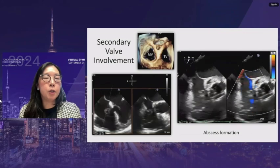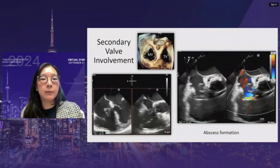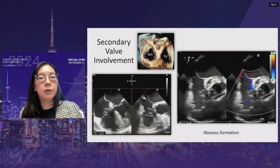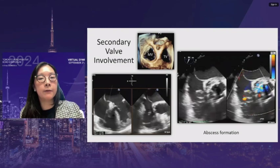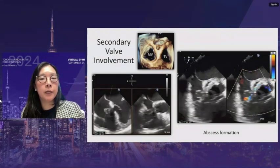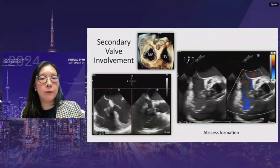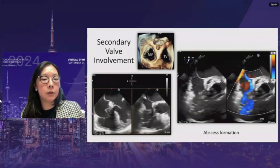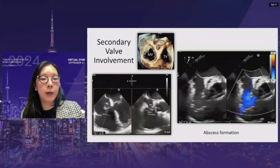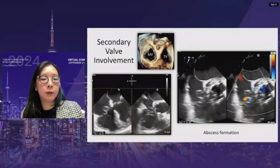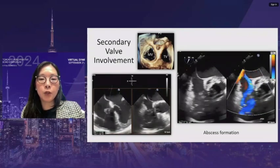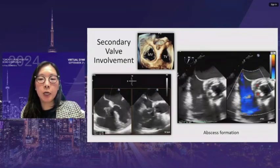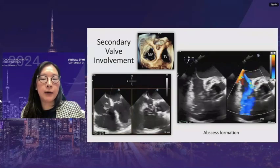Secondary valve involvement can also occur via abscess formation, not just jet direction. A 3D image shows the close proximity of all cardiac valves and how abscess formation can infect another valve. A large vegetation on the septal leaflet of the tricuspid valve is shown to be very close to the aortic valve on biplane. A short axis view of the bioprosthetic aortic valve reveals an abscess with a jet going into the tricuspid valve — this is how the tricuspid valve was seeded.